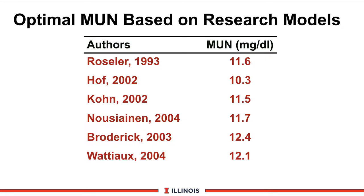Looking at various models for optimizing MUN, you can see studies from researchers at Maryland and Wisconsin showing what these models predict based on intake. This number runs around 10 to 12, which is a pretty good baseline and gives you a good idea of what we would predict based on various feeding and research studies.